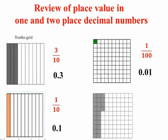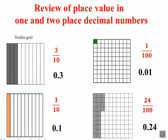Here the square is divided into 100 equal parts. Out of that, 24 parts are shaded. So the fraction for the shaded part is 24 by 100, and we can write it as decimal as 0.24.